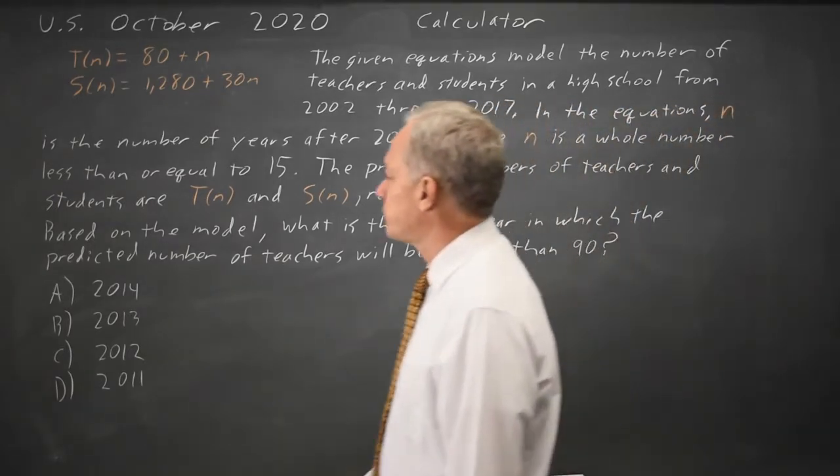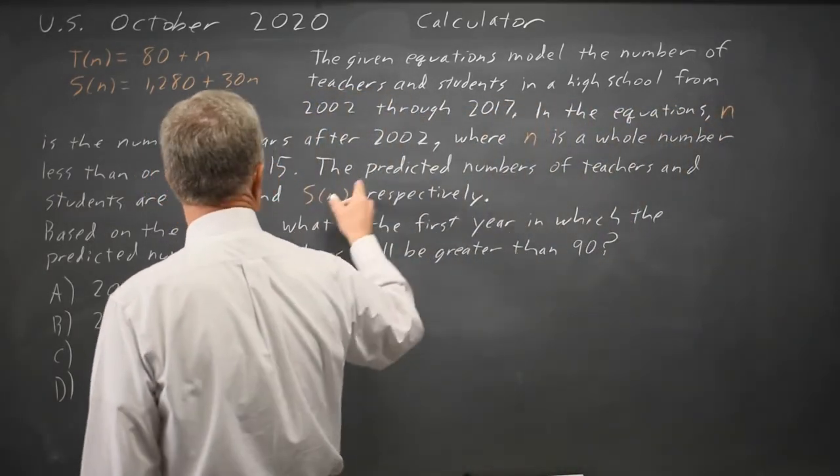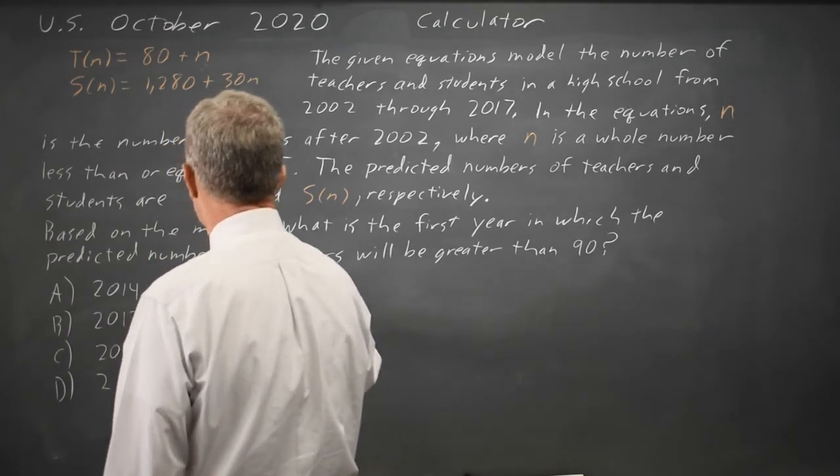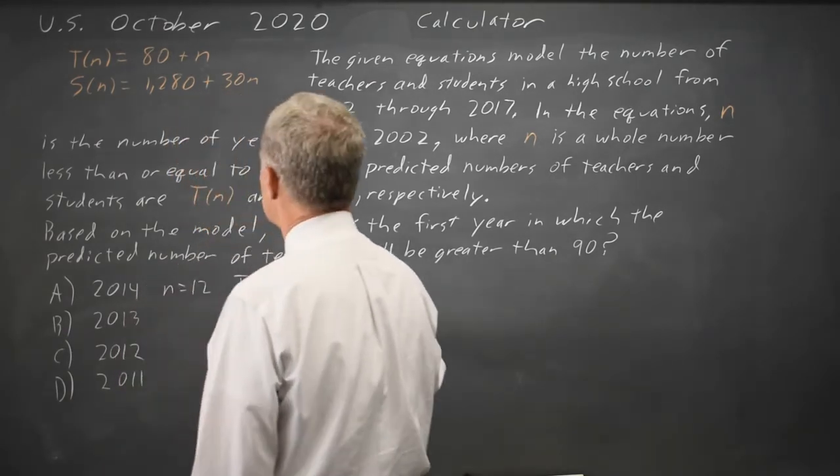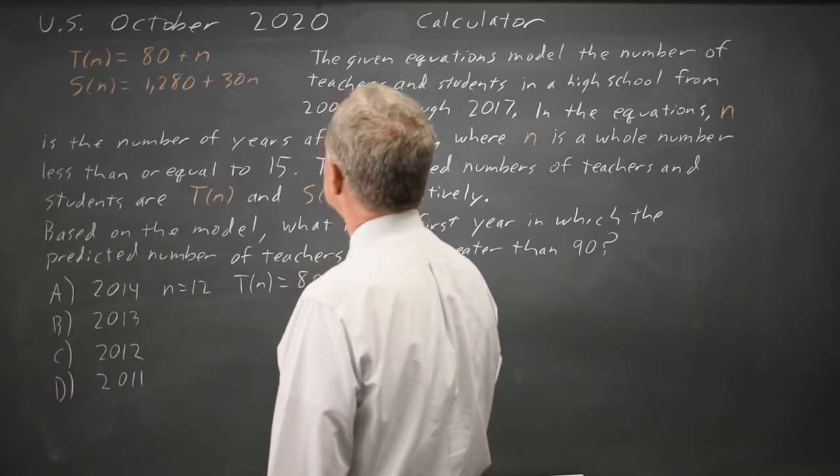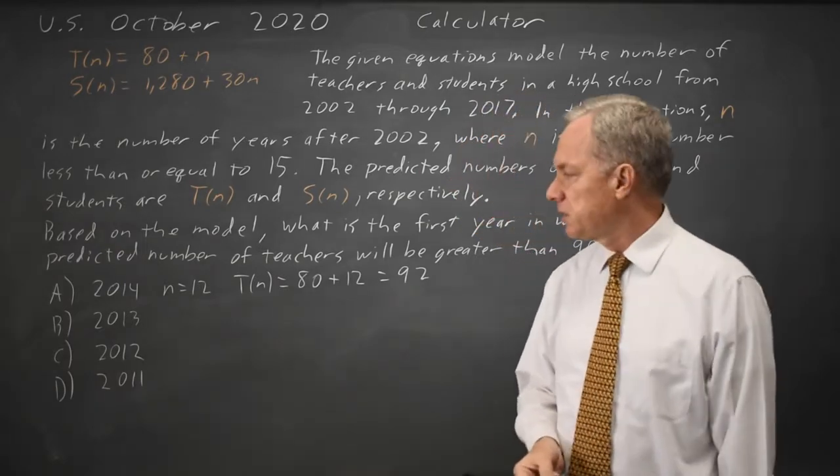I can find the predicted number of teachers in each year. So 2014 is 12 years after 2002, N equals 12. So T of N equals 80 plus 12 equals 92, which is greater than 90.